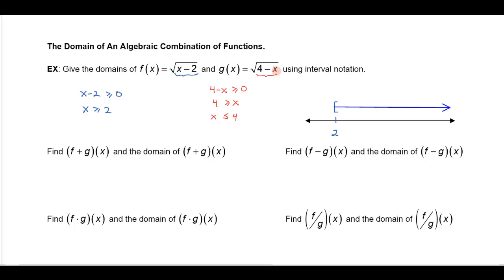You can see that if I plug in any values smaller than 4, like say 3, 4 minus 3 is 1 and I can take the square root of 1. Or even a negative number like negative 5 — 4 minus negative 5, the two negatives make plus 5, and so that would work out. So in this case I want the x's to the left of 4, so that would look like these guys right here if I were to graph them.